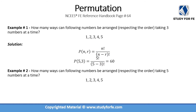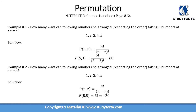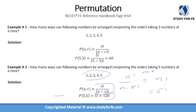A variation of the same question: how many permutations can we have if we are taking all five items at a time? Using the formula, n factorial divided by (n minus r) factorial, with n equal to r this simply becomes n factorial. So 5 factorial is 5 times 4 times 3 times 2 times 1, which equals 120. If you are taking all five items at a time, you can have 120 permutations.